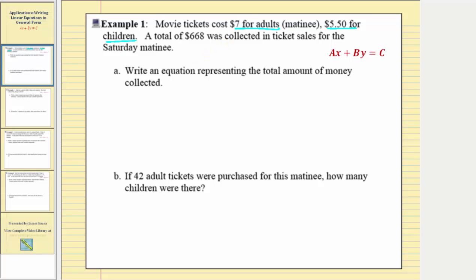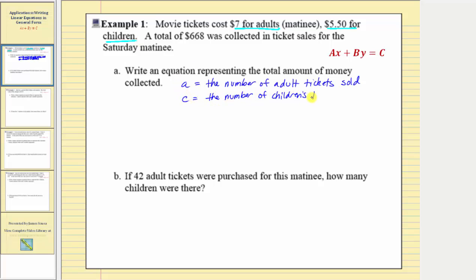Let's assign variables for these unknowns. Let a equal the number of adult tickets sold, and let c equal the number of children's tickets sold. The money collected from adult tickets would be seven dollars times a, the number of adult tickets sold. Plus the amount of money collected from children's tickets sold, which is five dollars fifty cents times c, the number of children's tickets sold.